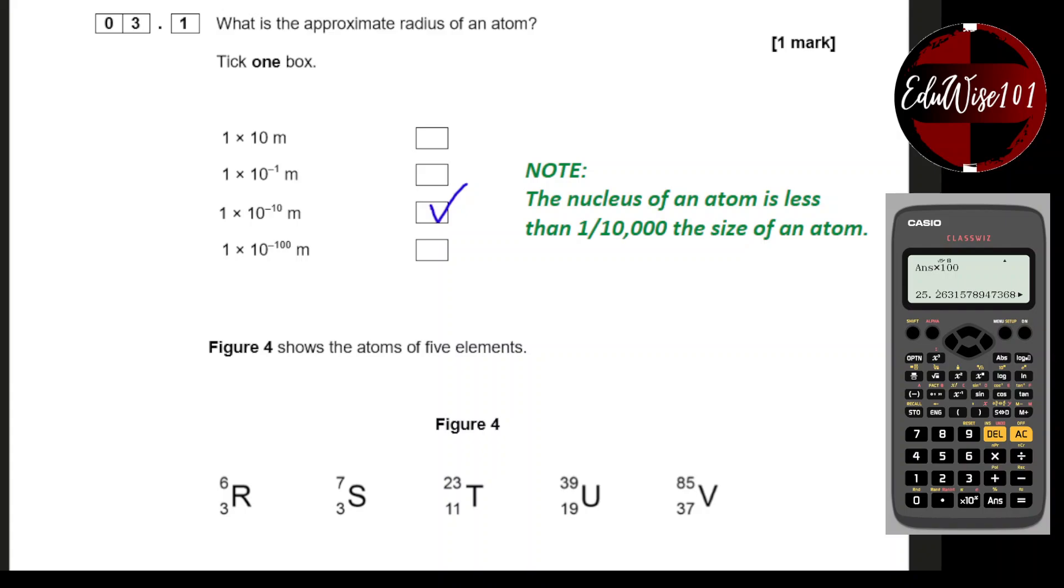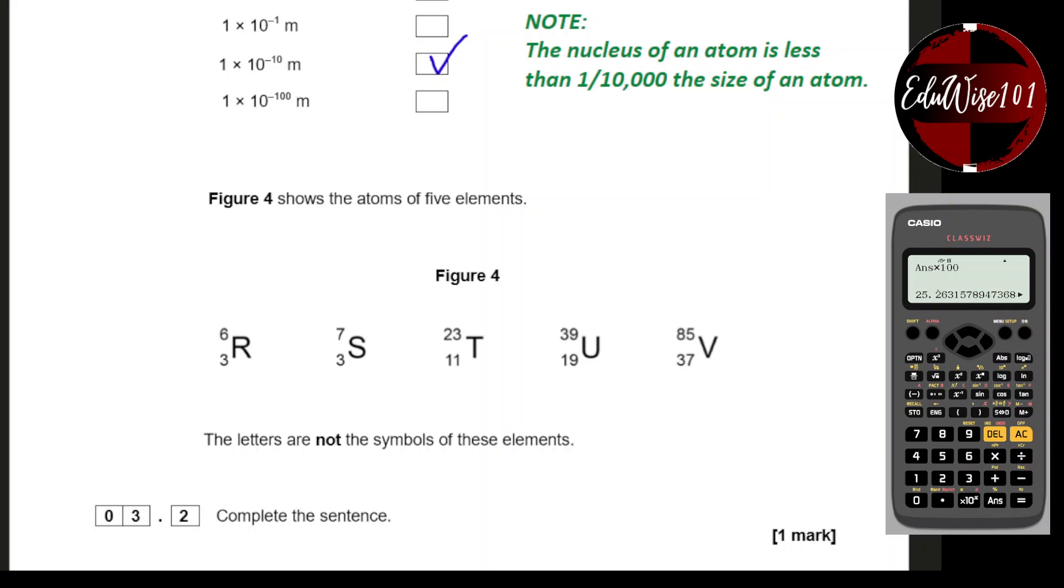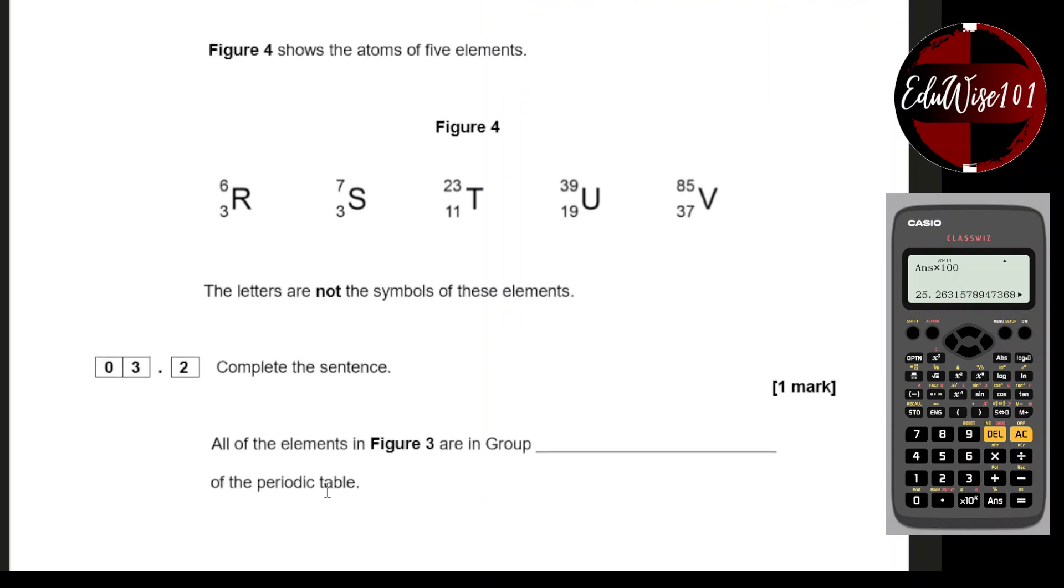Figure 4 shows the atoms of 5 elements. The letters are not the symbols of these elements. Complete the sentence: All of the elements in Figure 3 are in group ___ of the periodic table. You need to figure out which group all these elements are in. The best way to do that is to work out the electron configuration.